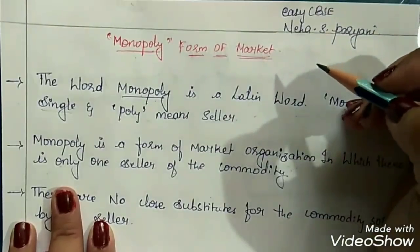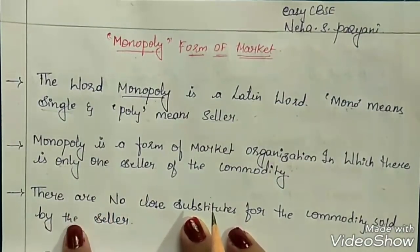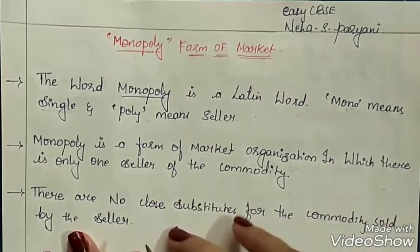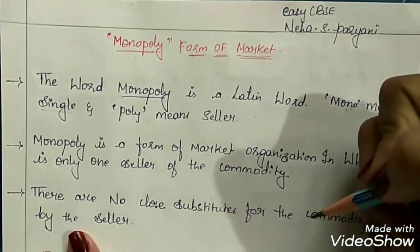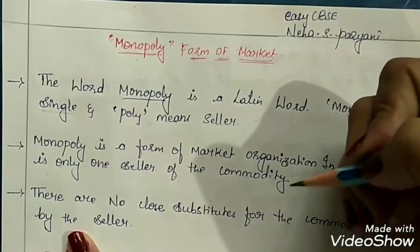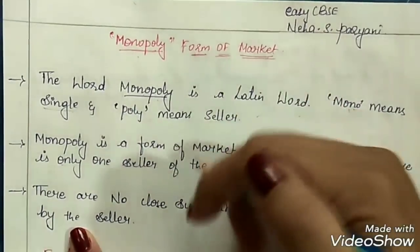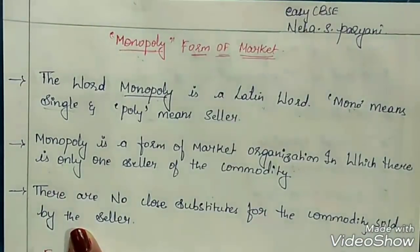Monopoly form of market. Earlier, in one of my previous sessions, we have already discussed about perfect competition market and price determination under perfect competition market. If you have not watched that video yet, you can get its link in the description box below. You can check it out. Today, we will discuss about Monopoly form of market.